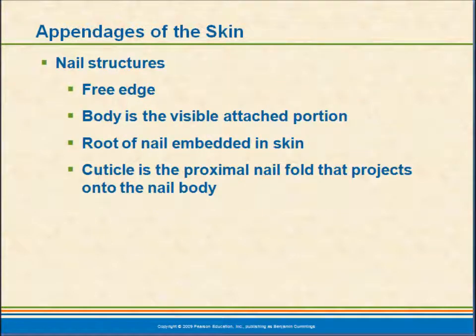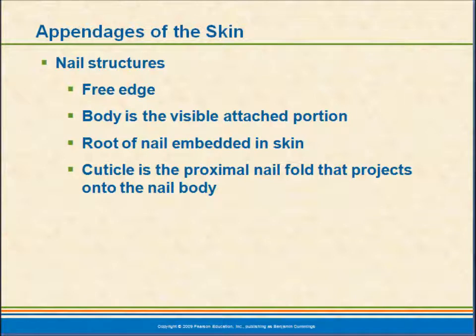The general structure of a nail includes the free edge — that's the part that picks stuff up — the body, which is the visible portion attached to the skin, and then a root or nail bed that's embedded in the skin, extending pretty far up underneath to the first joint. There's a little roll of tissue called the cuticle, and that's the fold that projects onto the nail body. It has another name: the epinychium. So if you have a hangnail someday and don't want to go to work, just tell your boss you have a damaged epinychium.